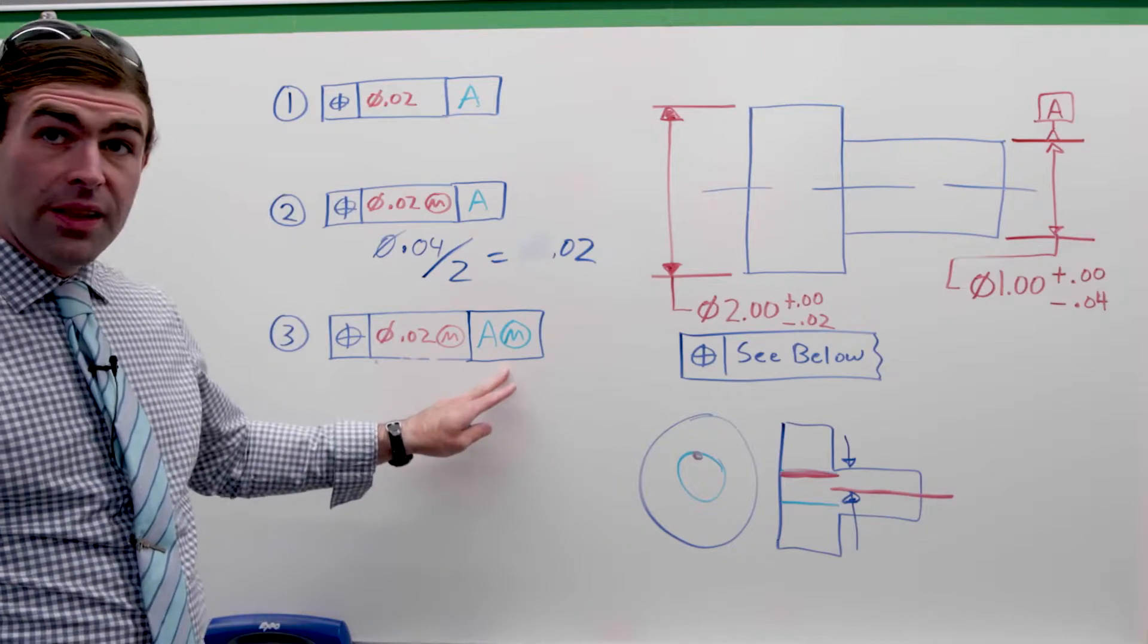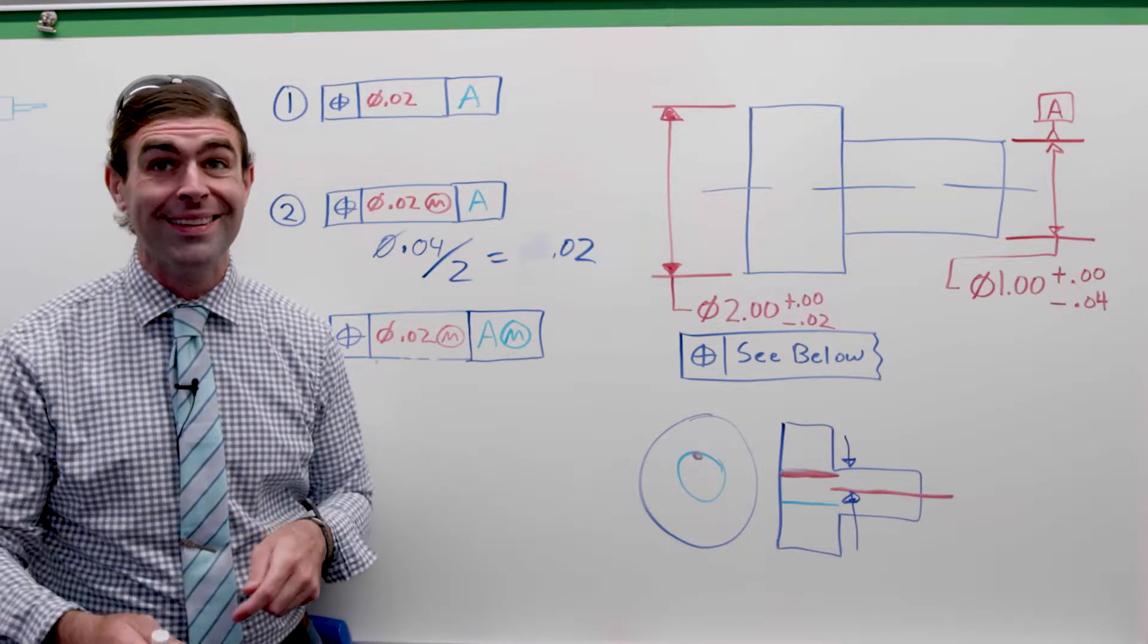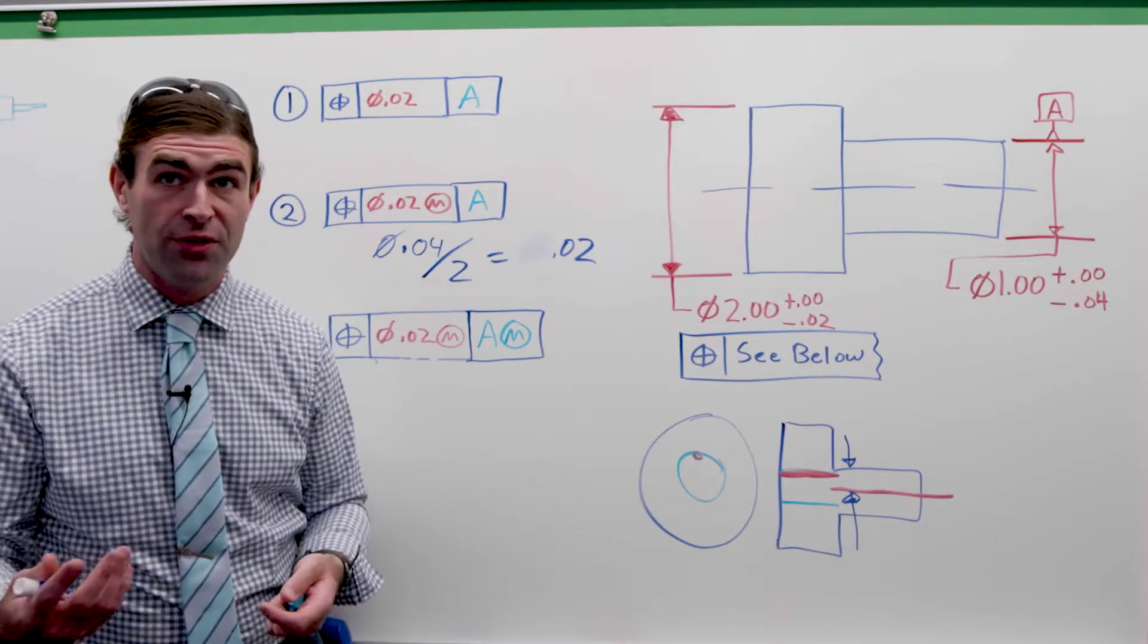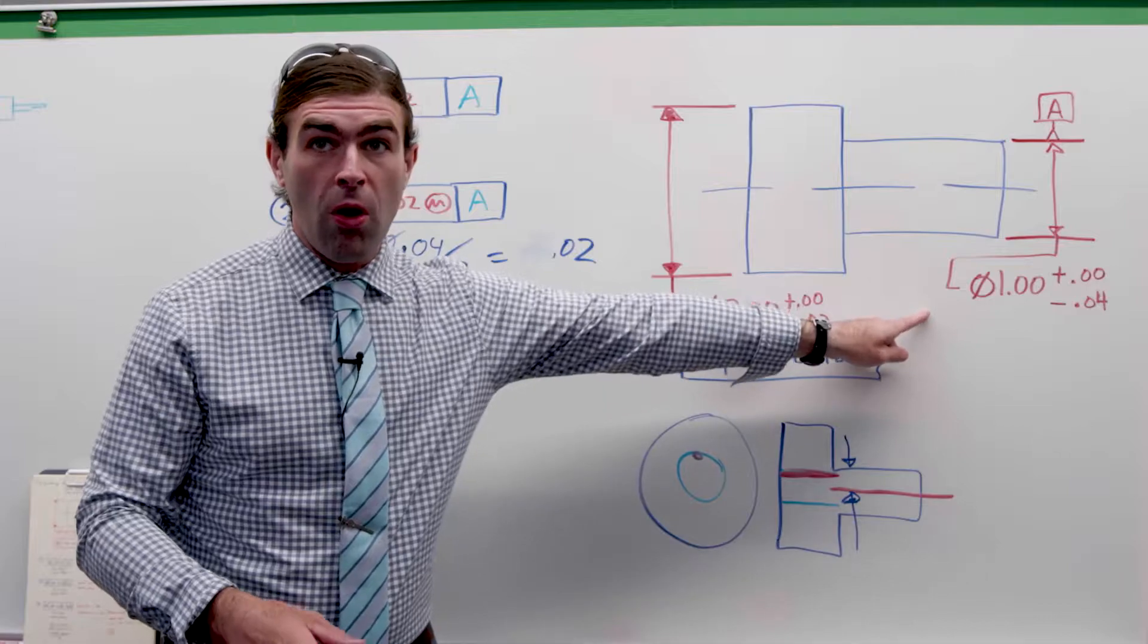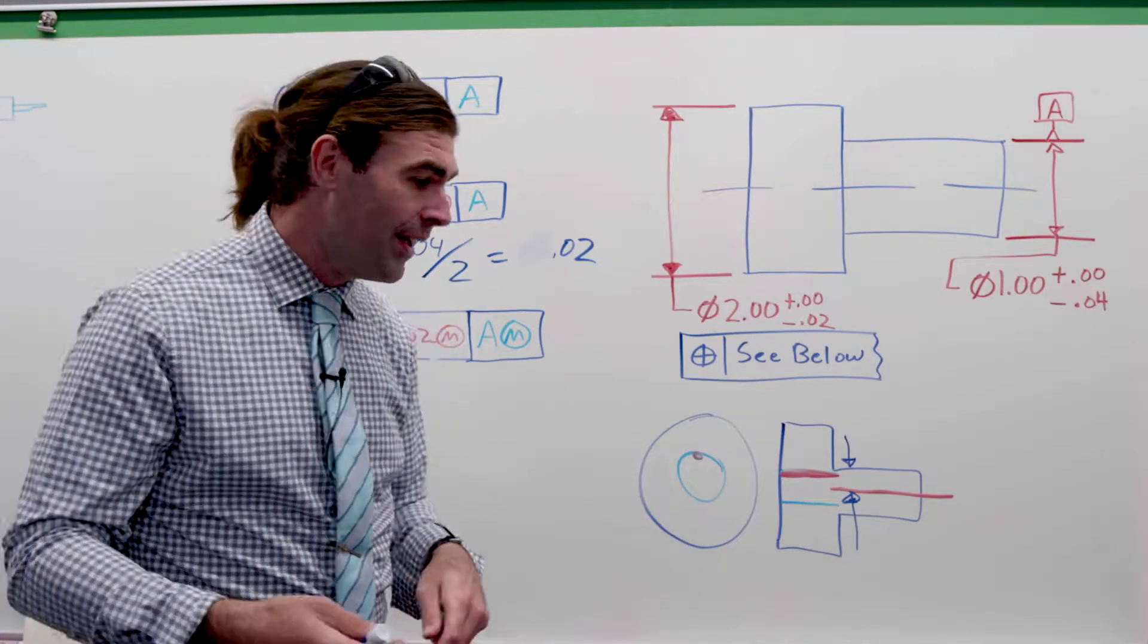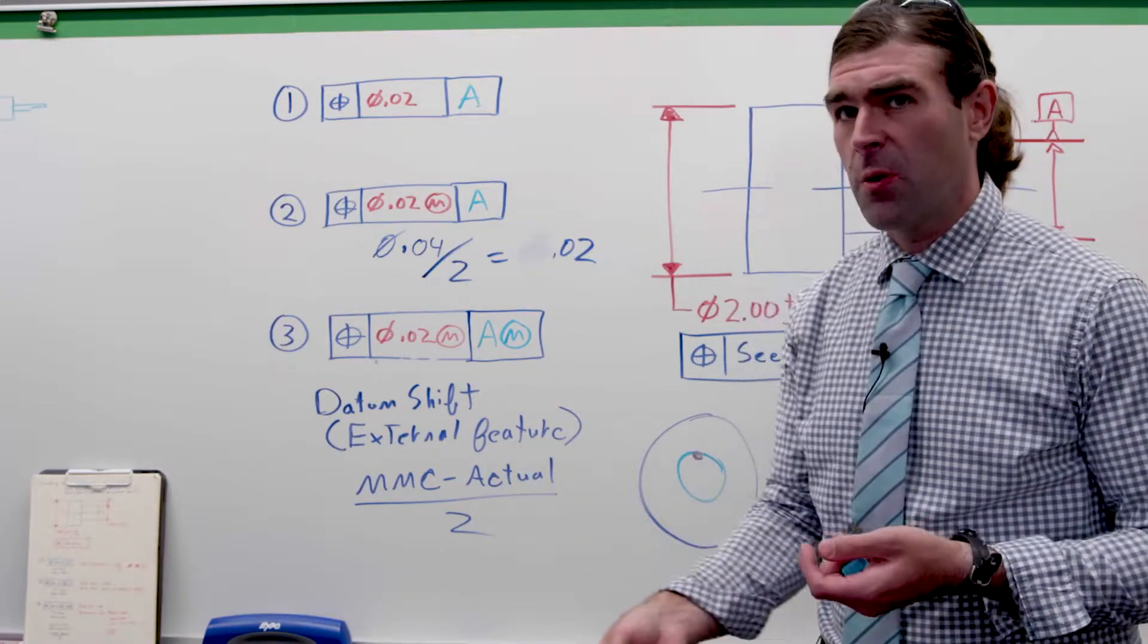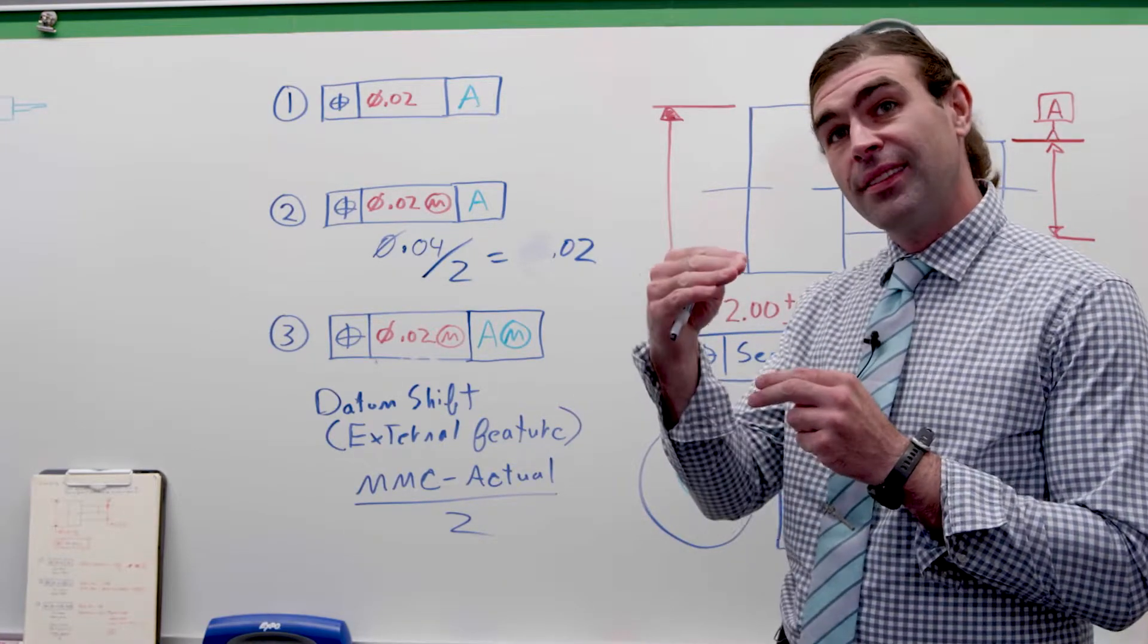Now, if we move to this, where our datum feature is at MMB, maximum material boundary, things change because now we're no longer capturing the datum feature with a collapsing equipment of some kind. It's free to move around, so you could use a fixed gauge. So what's happening here, essentially, if the datum feature comes in small, it can move around. So we want to know how much movement there can be.